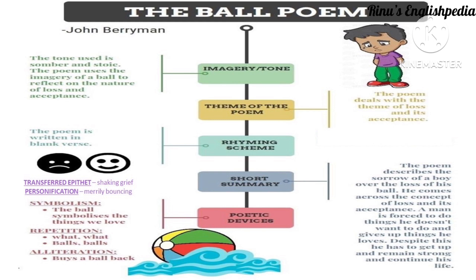For a quick summary: the poem describes the sorrow and grief of a boy who was playing with a ball, and suddenly his ball falls into the harbour. From here, the boy comes to understand the concept of loss and that he will have to accept it. A person is sometimes forced to give up things they love dearly. But we have to keep getting up and remaining strong, continuing with our life in spite of those losses and sacrifices. This is a quick recap of the poem — let's jump into the questions.